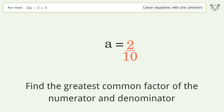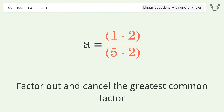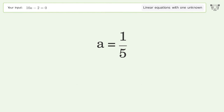Find the greatest common factor of the numerator and denominator, then factor out and cancel it. The final result is a equals 1 over 5.